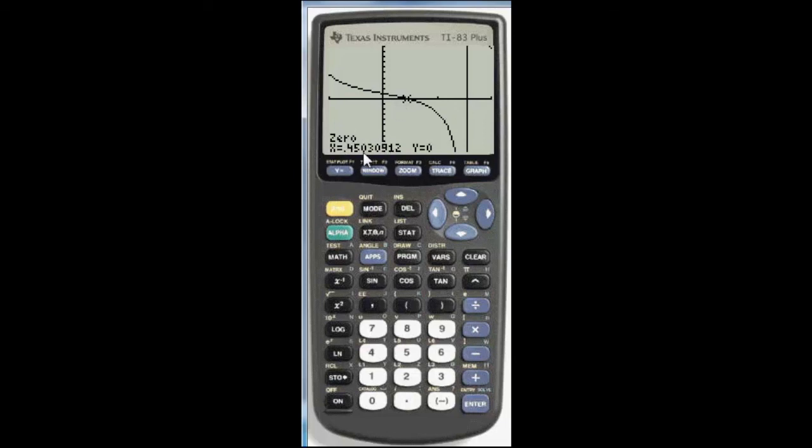And to the closest four decimal places, as the instructions say, our zero would be at x equals 0.4503. And it's that simple. Thank you.